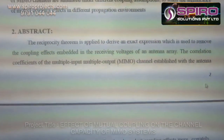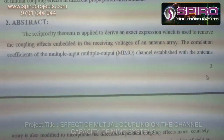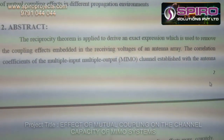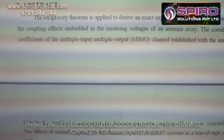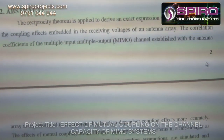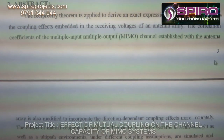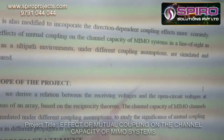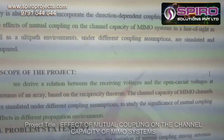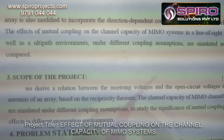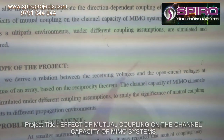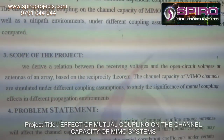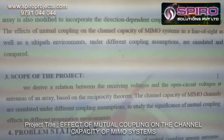In this paper, the main objective is that the reciprocity theorem is applied to derive an exact expression which is used to remove the coupling effects embedded in the receiving voltage of an antenna array. The correlation coefficients of the MIMO channels established with the antenna array are also modified to incorporate the direction-dependent coupling effects more accurately. The effects of mutual coupling on the channel capacity of MIMO systems in a line-of-sight as well as a multipath environment are simulated and compared.